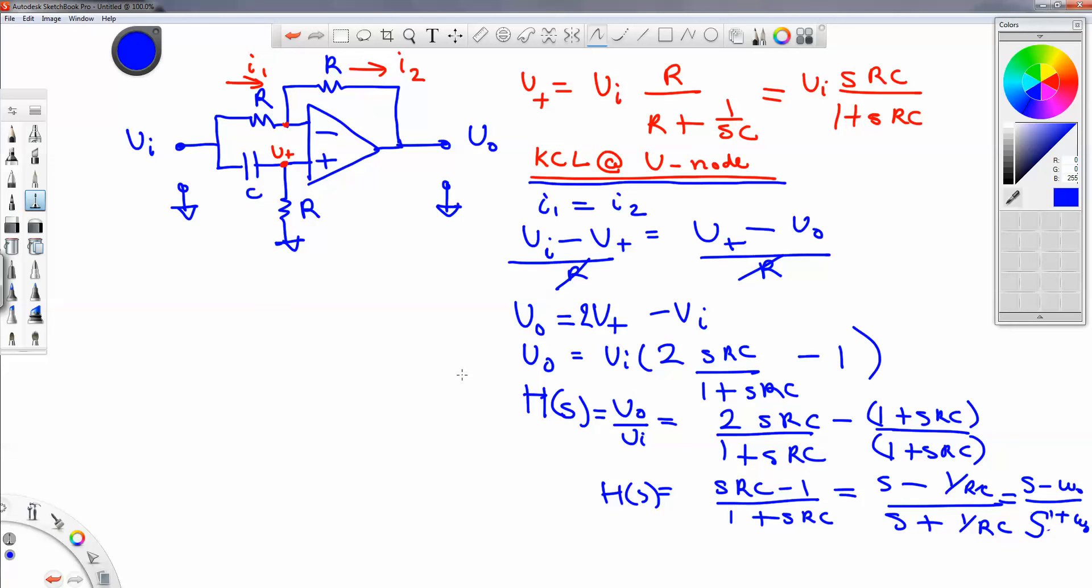Okay. So now we have the transfer function, and let's verify that it's an all-pass filter. So let's find the DC and daylight gain and phase.